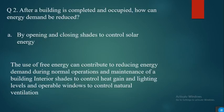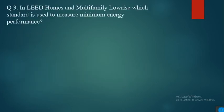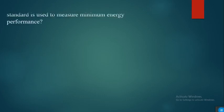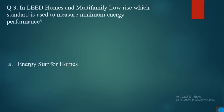Interior shades to control heat gain and lighting levels, and operable windows to control natural ventilation. Question three: in LEED Homes and multifamily low-rise, whose standard is used to measure minimum energy performance? The options are: IECC, Energy Star for Homes, ASHRAE 90.1, ASHRAE 62.1. The answer is Energy Star for Homes.